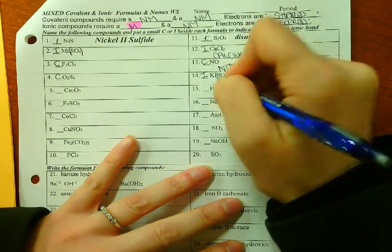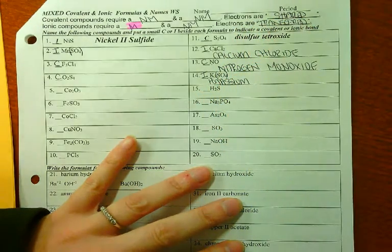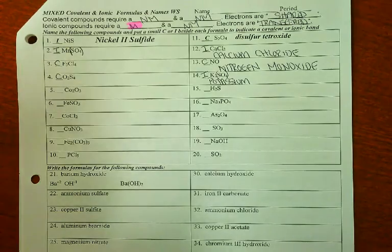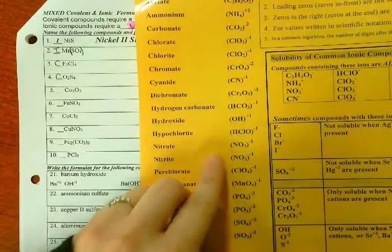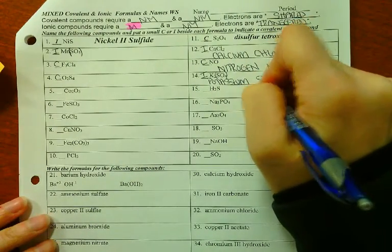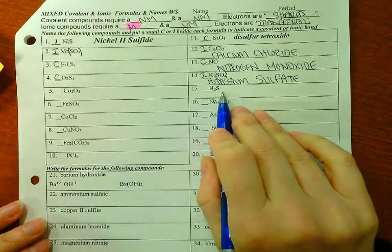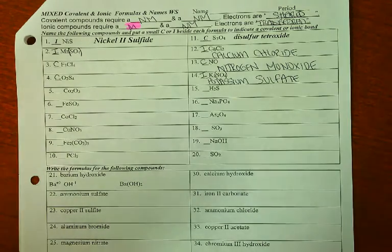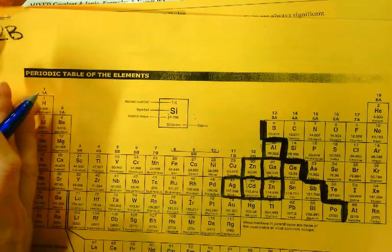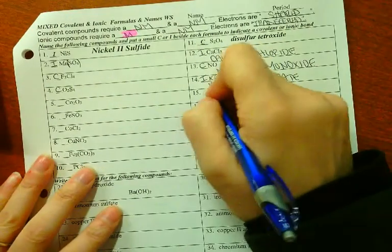K2SO4. Potassium was my metal, so I name it potassium. Potassium's in family 1, so it doesn't get a Roman numeral. SO4, I look at my polyatomic ions list. SO4 is sulfate. Potassium sulfate. Hydrogen and sulfur are both nonmetals. Hydrogen, even though it's over here, covalently bonds like a nonmetal. So hydrogen is a nonmetal. Sulfur is definitely a nonmetal, so that's covalent. Two hydrogens would be dihydrogen, and one sulfur is monosulfide.